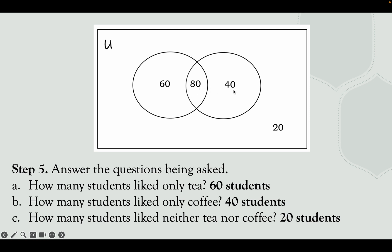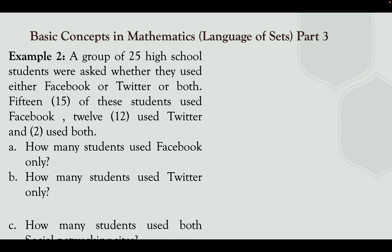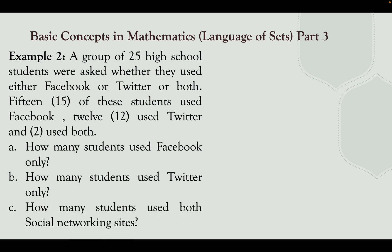We have 80 plus 40 plus 60, which is 180. But in the statement there are 200 students selected randomly, so that means 20 students don't like both coffee and tea — those 20 students like neither tea nor coffee. Now for example number two: a group of 25 high school students were asked whether they used Facebook, Twitter, or both. 15 students used Facebook, 12 used Twitter, and 2 students used both Facebook and Twitter. The questions are: how many used Facebook only, how many used Twitter only, and how many used both social networking sites.